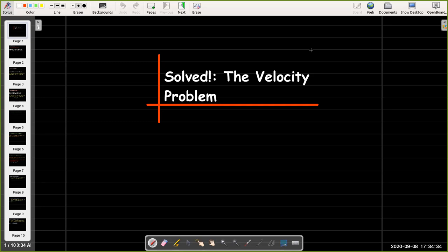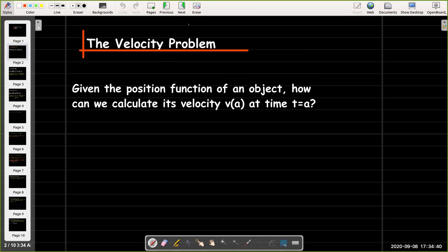In this video we're going to talk about the solution to the velocity problem. Recall that the velocity problem was that we had a position function of an object. So we knew the position of an object at every time t, and we were trying to calculate its velocity at a given time t equals a.